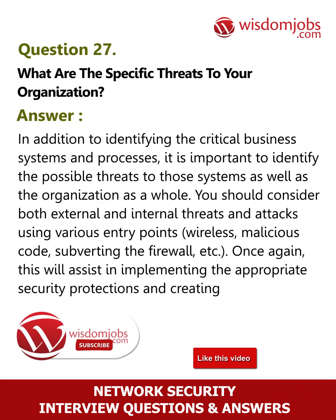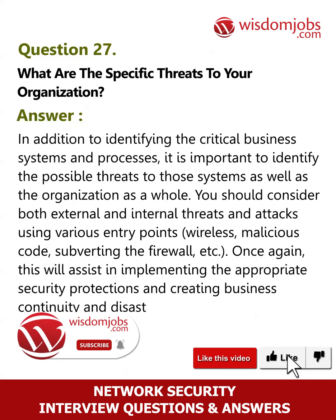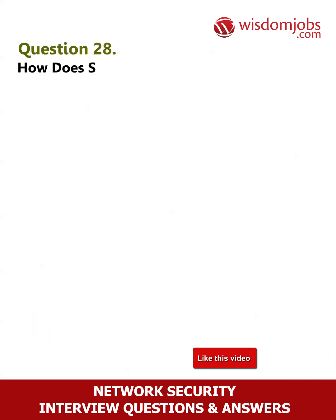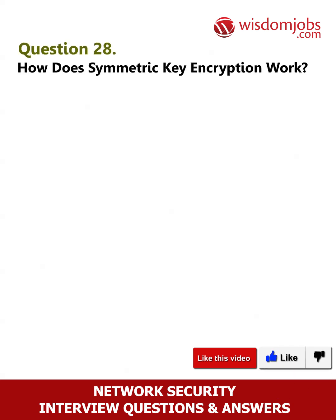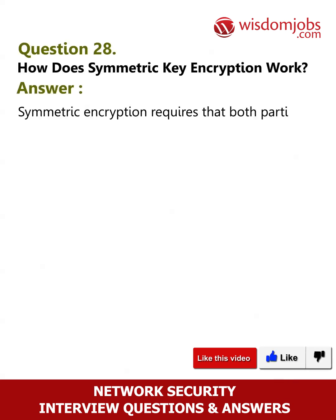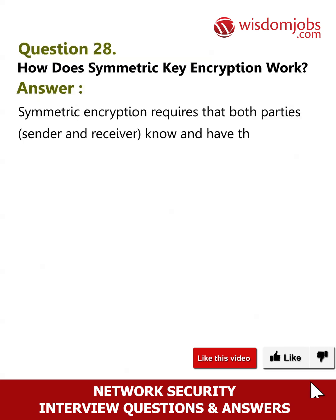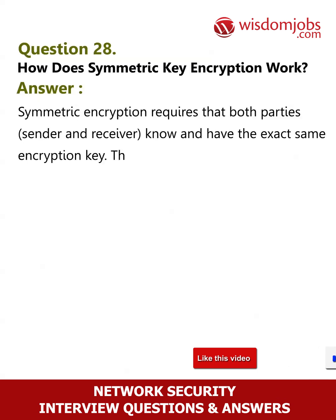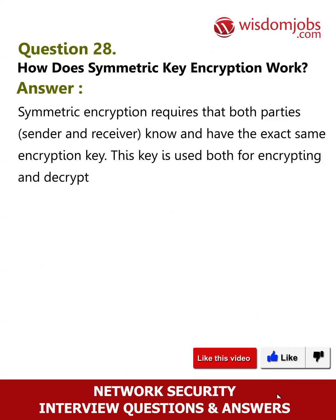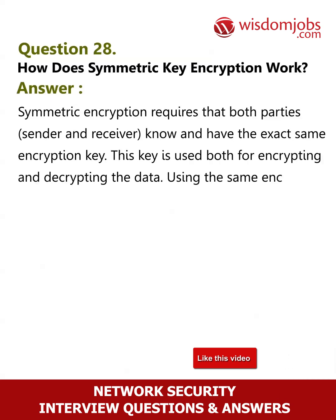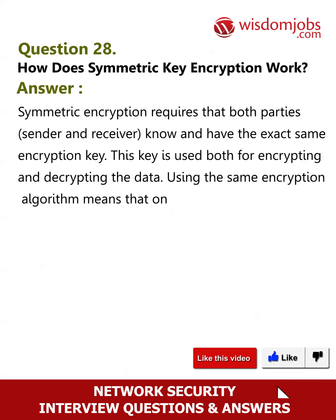Question 28: How does symmetric key encryption work? Symmetric encryption requires that both parties — sender and receiver — know and have the exact same encryption key. This key is used both for encrypting and decrypting the data. Using the same encryption algorithm means that only those individuals who know or have the same key will be able to read any messages encrypted by the symmetric key.